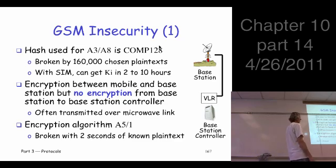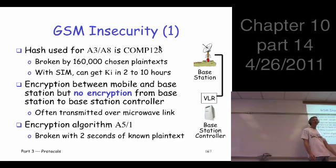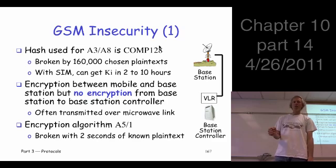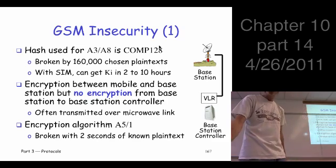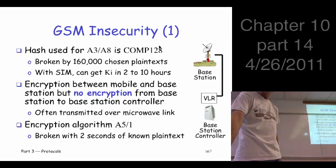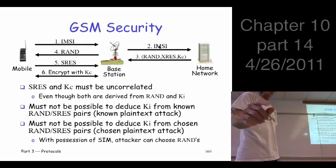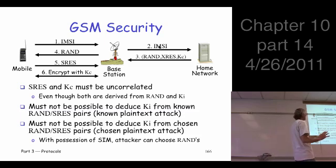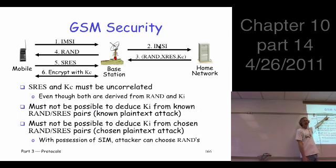You can break it with 160,000 known chosen plaintexts. What that means is if Trudy could somehow choose the random value and see the corresponding value that comes back, and she could do that 160,000 times, she could recover the key KI.